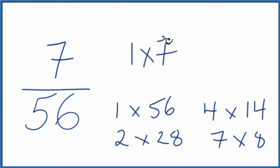So if we look for the greatest common factor, the greatest common factor for 7 and 56, that's going to be 7.